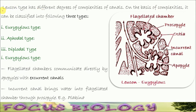Leucon type has different degrees of complexity of canals. On the basis of complexity in canals, this Leucon type has been classified into three types or three subtypes.